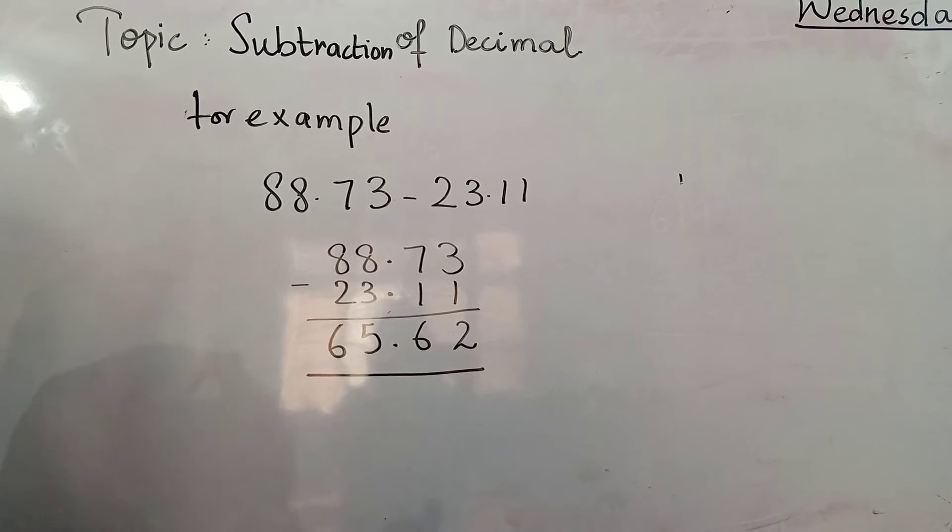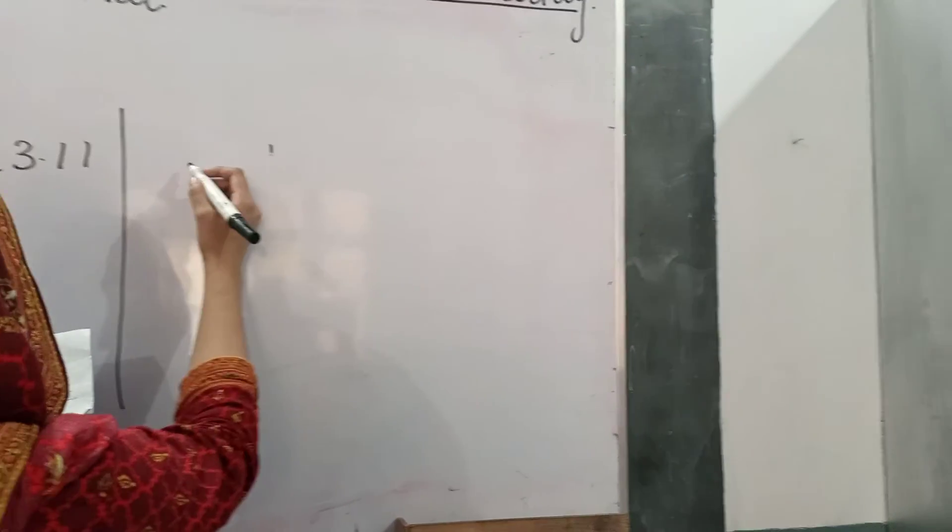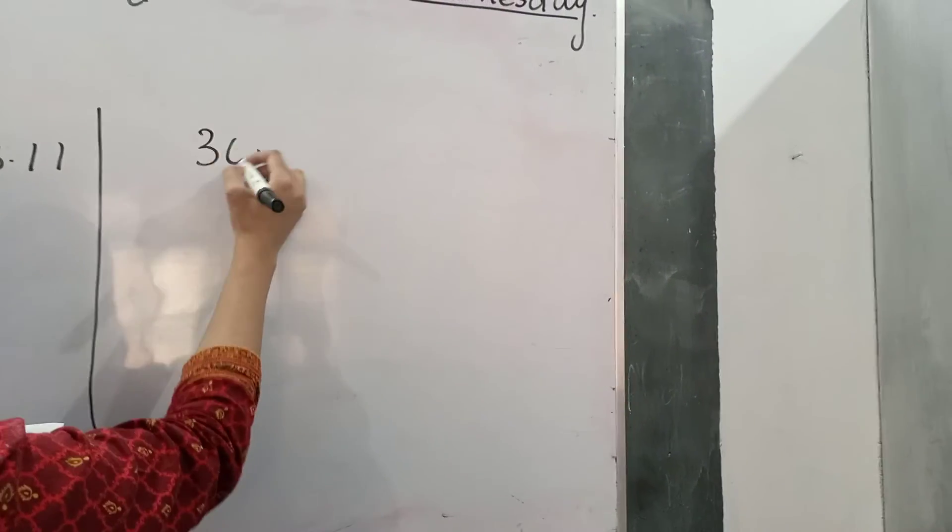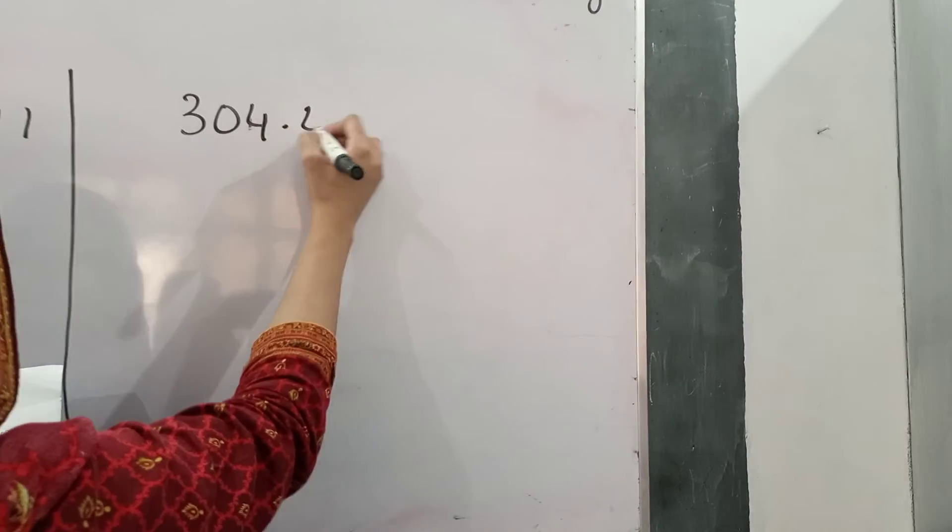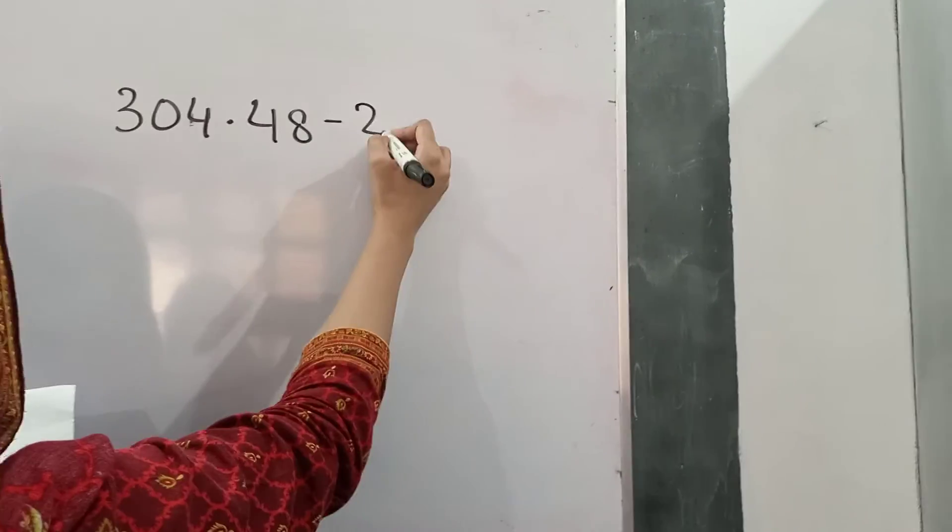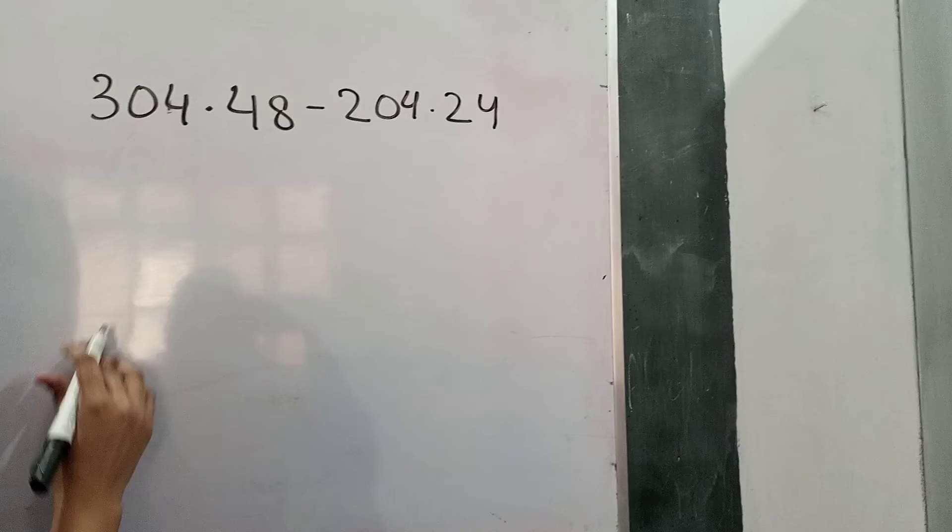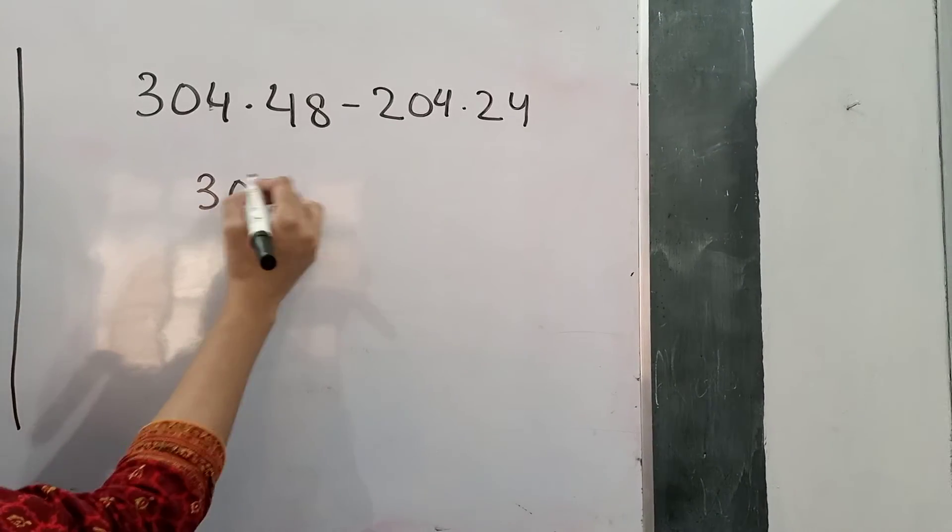Now, come to another example. 304.48 minus 204.24. We will write this vertically as it is.